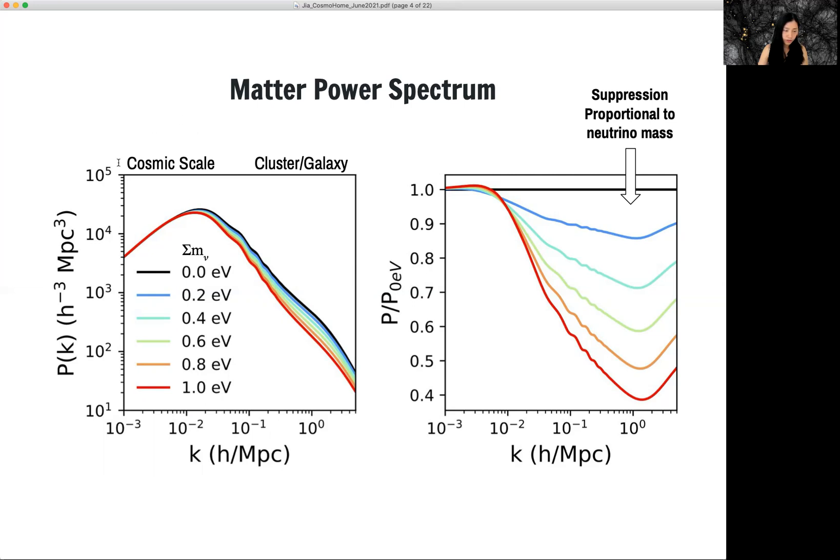On the very large scale, you see that varying neutrino mass has very little impact on the matter power spectrum. But on very small scale, when you vary, you see differences.